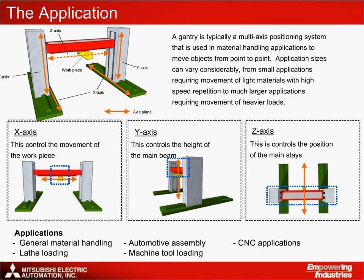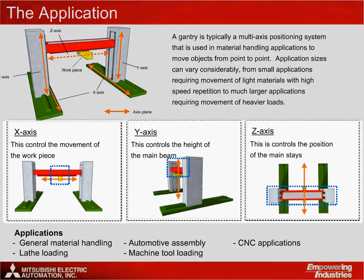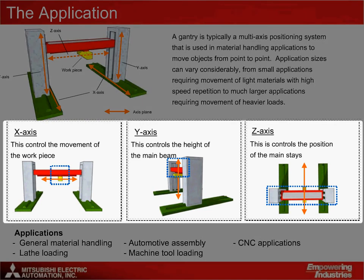In this application example, there are three axes involved. The X-axis, which controls the movement of the workpiece. The Y-axis, which controls the height of the main beam on the gantry. And the Z-axis, which controls the position of the mainstays of the gantry.